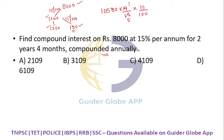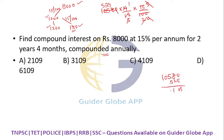Computing the 4-month simple interest: 10,580 × 15/100 × 4/12 = ₹529. Adding ₹529 to ₹10,580 gives a total amount of ₹11,109.